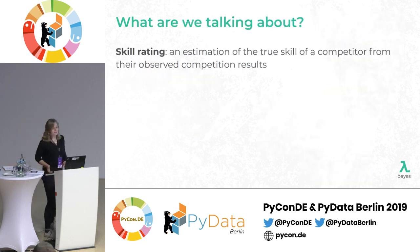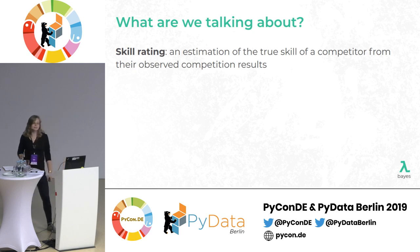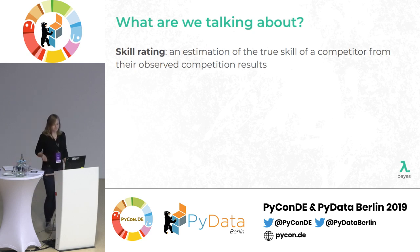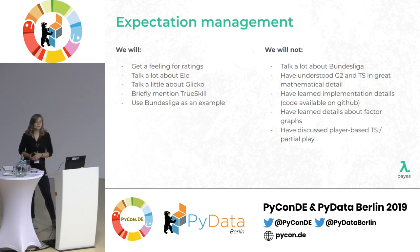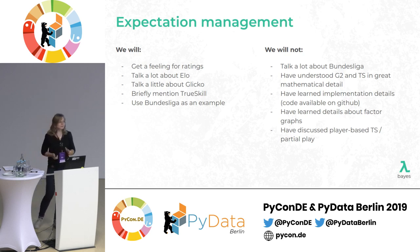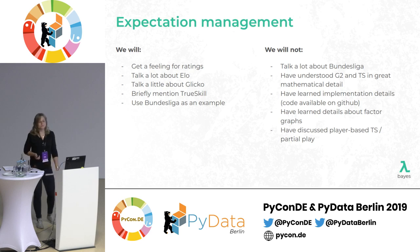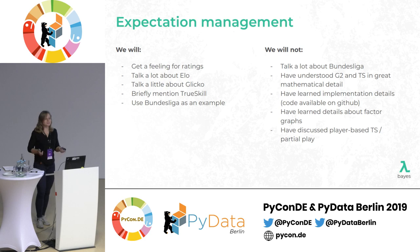So what are we talking about here? A skill rating is an estimation of the true skill of a competitor from their observed competition results. To give you an outline: we're going to talk mostly about the ELO ranking, then a bit about Glicko, and very briefly about TrueSkill. Bundesliga will be our example. This is an introductory talk, so we're going to be focusing on the basics.